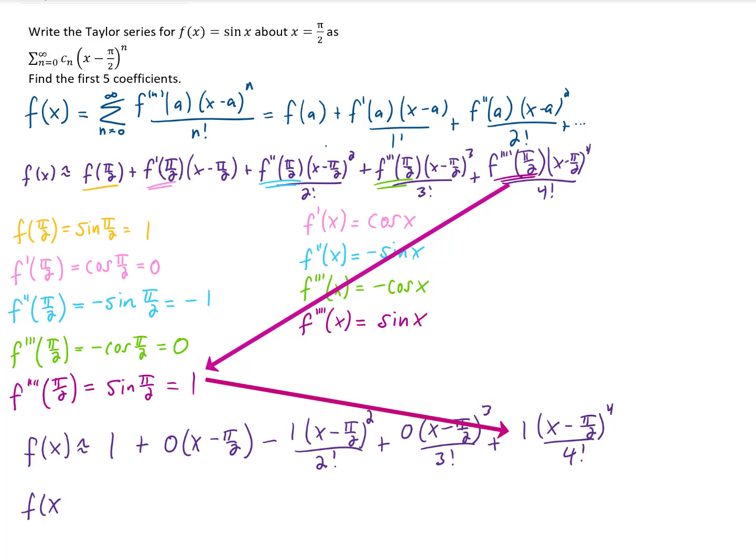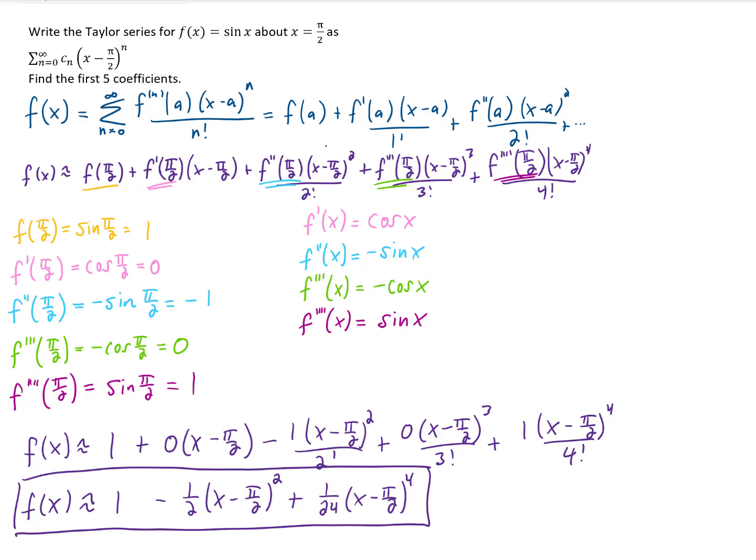So one last line to simplify and get rid of our 0 terms. And that gives us the Taylor series for the sine of x centered at x equals pi over 2. Now if we just want the first five coefficients, then we can pull those out of this problem. They're going to be 1, 0, negative 1 half, 0, and 1 over 24.